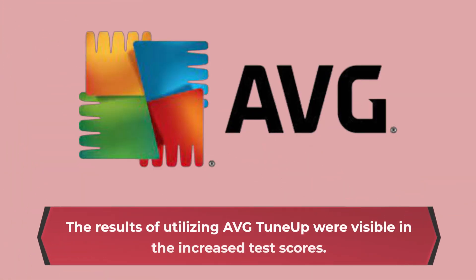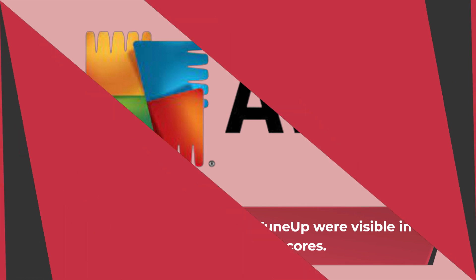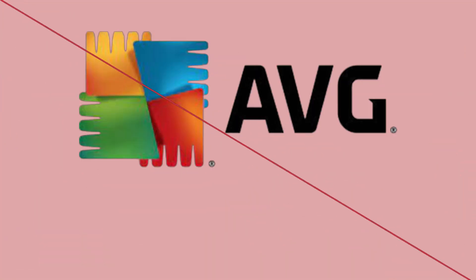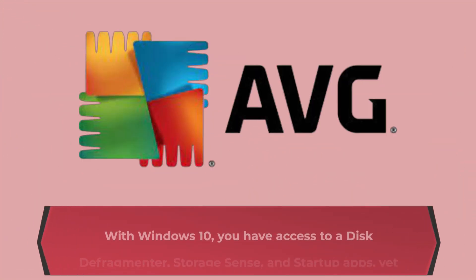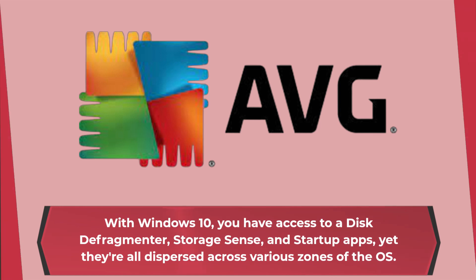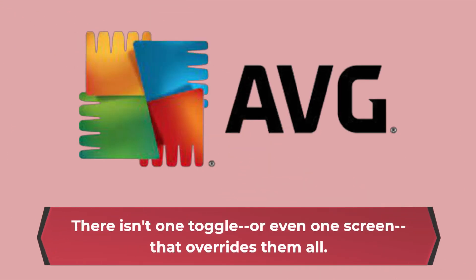The results of utilizing Average Tune-Up were visible in the increased test scores. Average Tune-Up assembles all its helpful tools in a single fitting spot. With Windows 10, you have access to a disk defragmenter, storage sense, and startup apps, yet they're all dispersed across various zones of the OS. There isn't one toggle or even one screen that overrides them all.